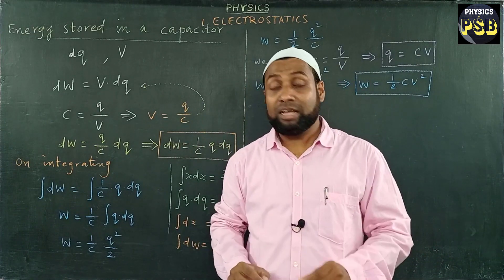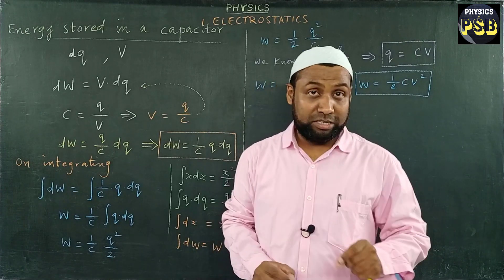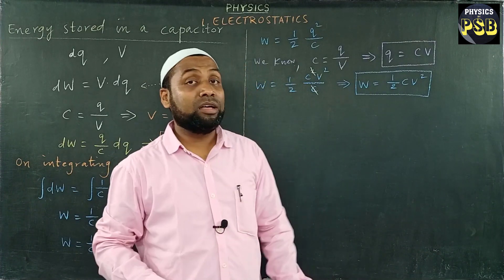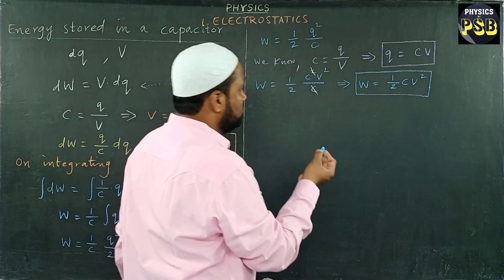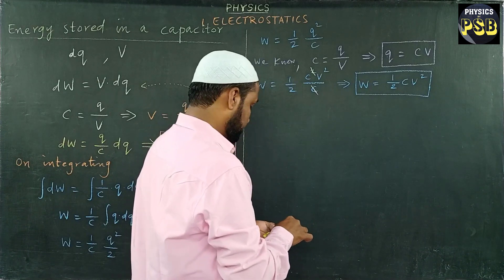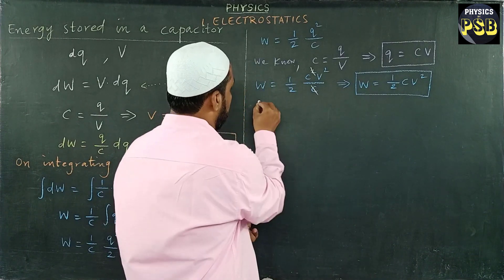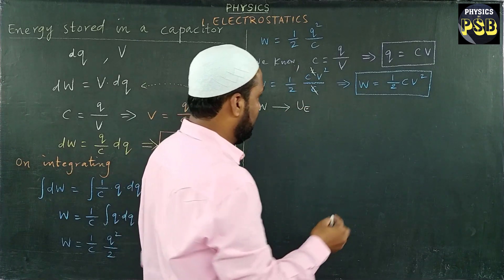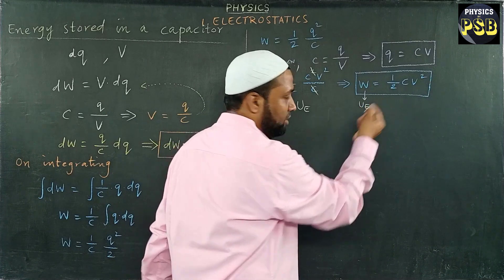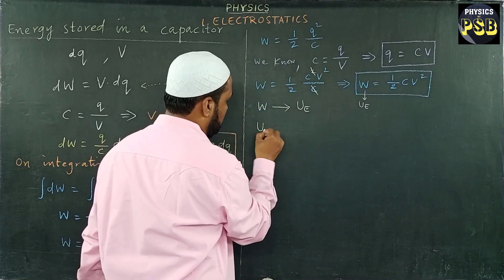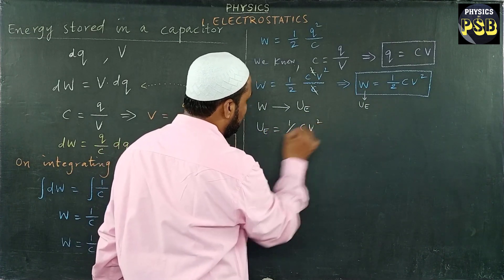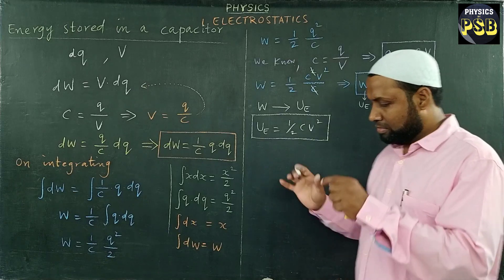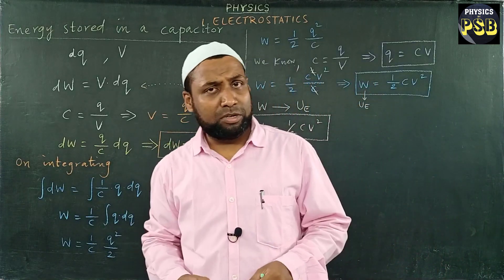The work done by a battery to store charge in a capacitor is stored in the form of electric potential energy. So this work done will be stored in the capacitor in the form of electric potential energy. Since W is electric potential energy, we denote it as UE. This equation becomes: UE = (1/2)·CV². This is the expression for electric potential energy stored in a capacitor.